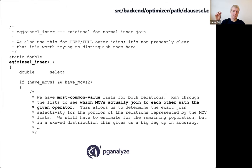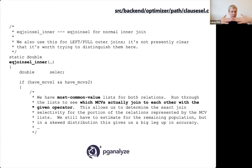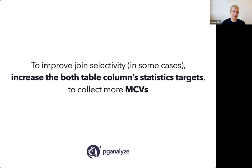One thing that stood out when I looked at this in the source code is that Postgres has the concept of Most Common Value lists. When you run ANALYZE on a table, Postgres finds how frequent certain values are. These Most Common Value lists are used for join selectivity estimation — when joining two tables and matching up rows, the most common values give Postgres a sense of how likely it is there are matches between those tables. You can control the Most Common Value lists by increasing the statistics target. The default is 100; if you increase it to 500, you get many more most common values, potentially improving join selectivity in some cases.